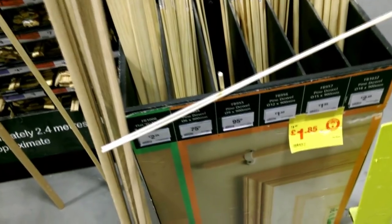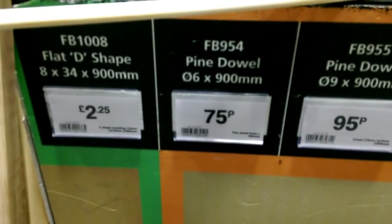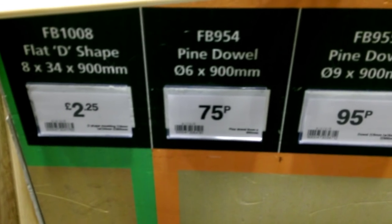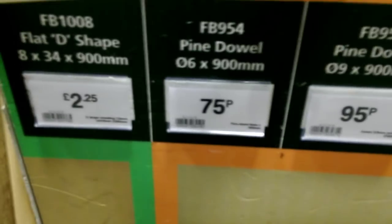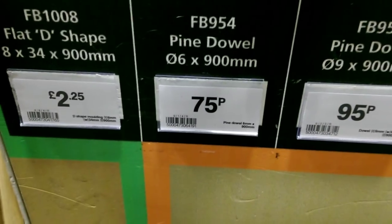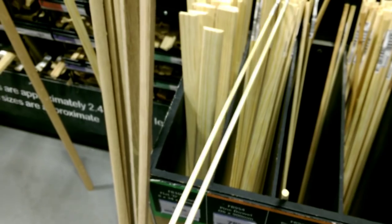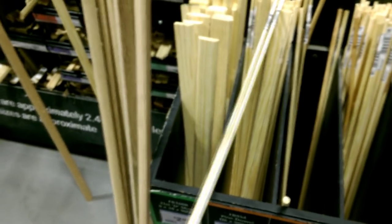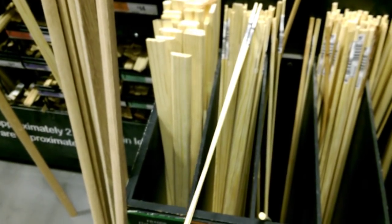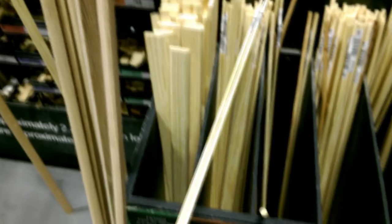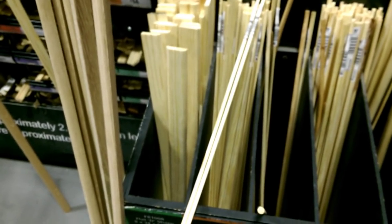We're in B&Q now. Six millimeter by 900 millimeter long pine dowel. 75p. So that's cheaper than it was over in home base. I just don't know whether they'll take the strain of a kite. I'd rather have spruce than pine. But pine's all they seem to do.